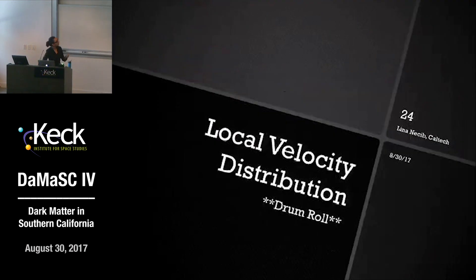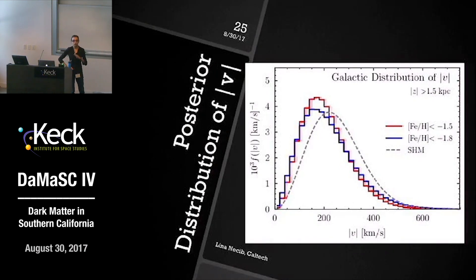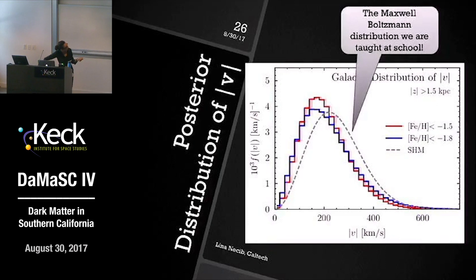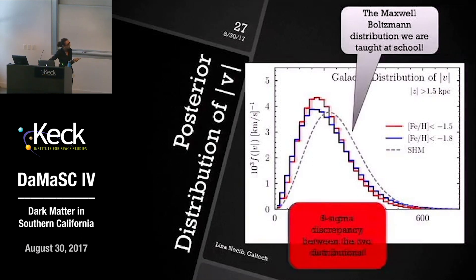Here is the local velocity distribution we wanted. We show two analyses: one with [Fe/H] < −1.5 and one with [Fe/H] < −1.8. We want lower and lower metallicity, but at some point you run out of statistics, so hopefully future data will push it even lower. The standard halo model — the Maxwell-Boltzmann distribution used for all existing limits — is shown for comparison. Although hard to judge by eye, these two distributions have a 6-sigma discrepancy, so they are statistically very different.